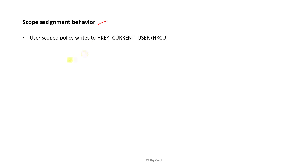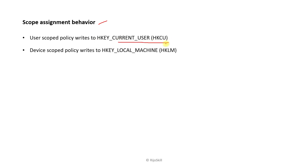Next we discuss the scope and assignment behavior. There are two types of scope available: user-scoped policy, which is registered with the registry current user, and device-scoped policy, which affects the registry local machine.